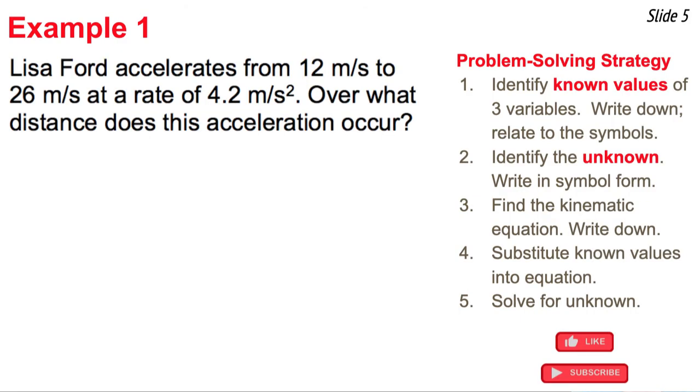This is example one. And you'll notice on the right side of the slide is a five-step problem solving strategy that we're going to use. And the first step is to read the problem carefully and identify the known values of three variables. So Lisa Ford accelerates from 12 meters per second to 26 meters per second at a rate of 4.2 meters per second squared. There's our three values.